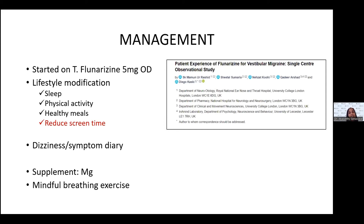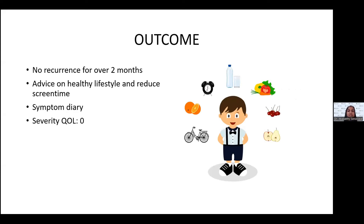One more thing I highlight to parents is lifestyle modification — ensuring adequate sleep, exercise, healthy meals, and most importantly reducing screen time, as this may be a triggering factor. Having a dizziness or symptom diary is also helpful, so the child can jot down each time they feel dizzy or have spinning sensations. For older children they can do it themselves; parents help with younger children. I usually prescribe magnesium tablets, as there is literature supporting good outcomes in children taking magnesium and riboflavin. This child currently has no recurrence for more than two months, and his overall severity index is zero.